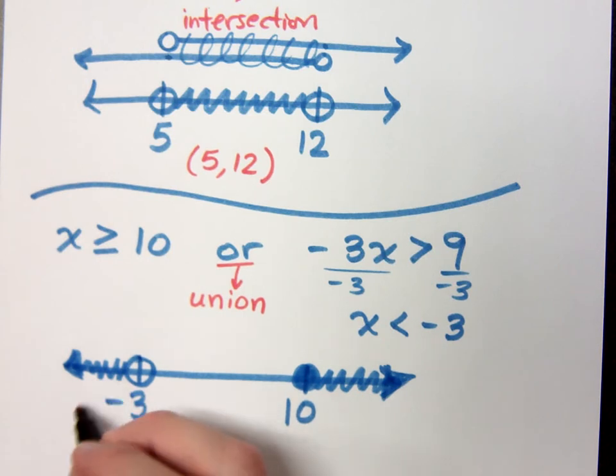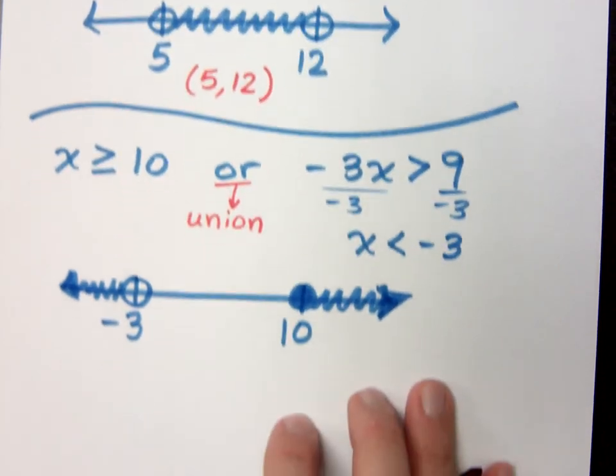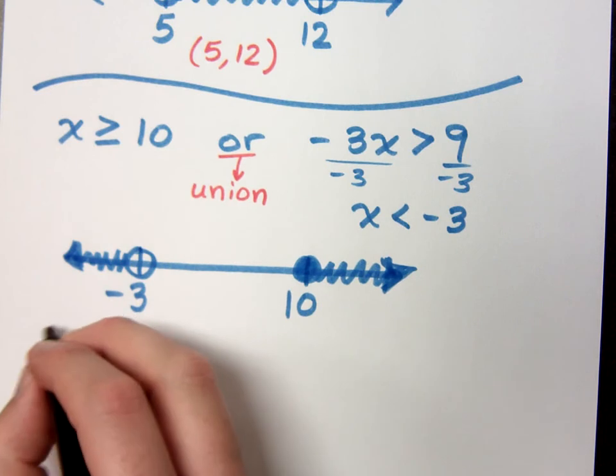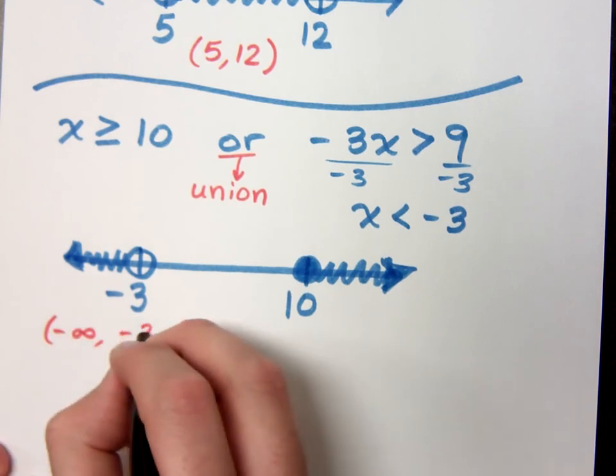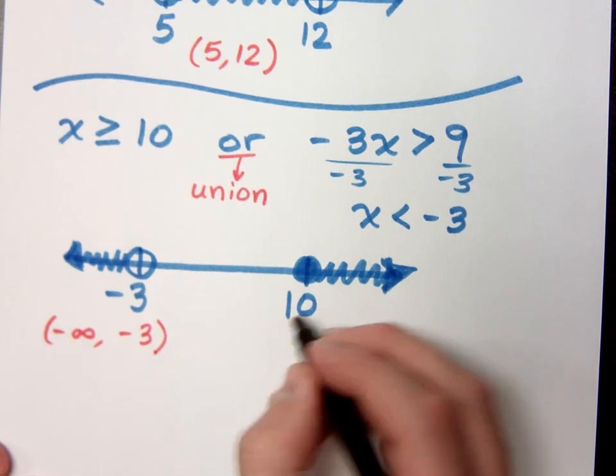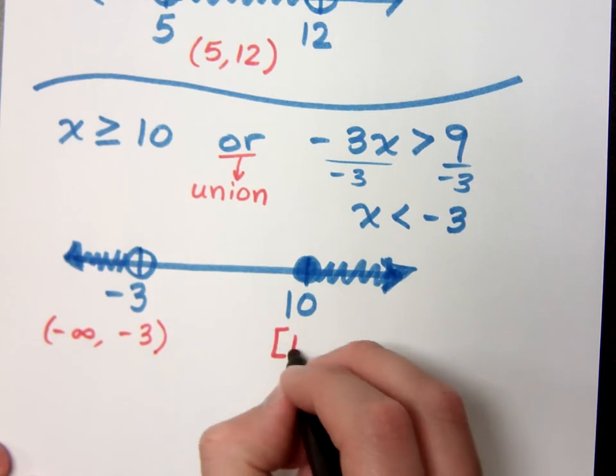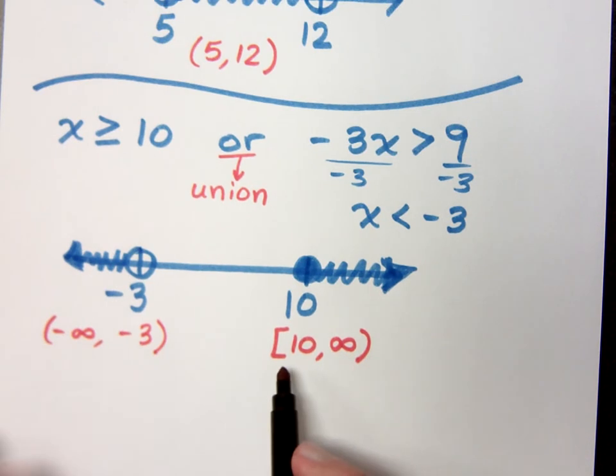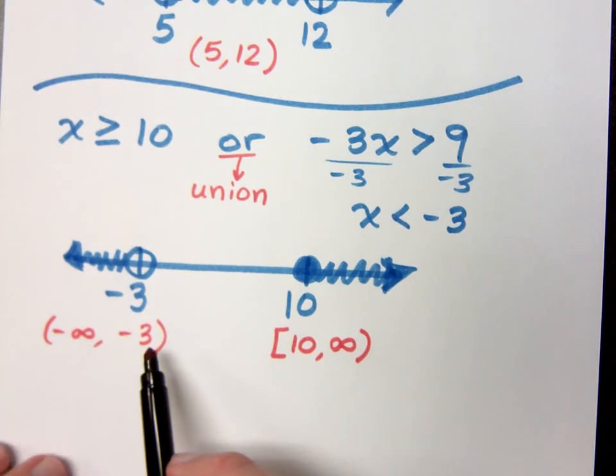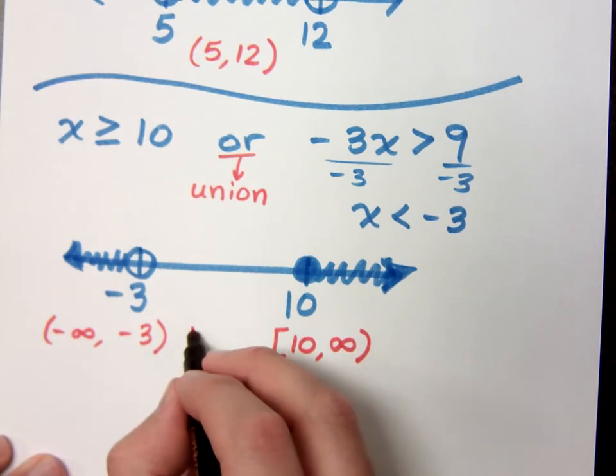So, if I describe this piece right here using interval notation, I get from negative infinity to negative 3. Over here, this guy is from 10 to infinity. The only place I have a closed circle is the 10, and that's the only place I have a bracket. But, there's something that joins these guys together, and that's the union symbol right here.